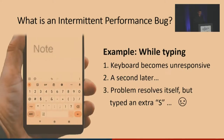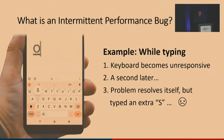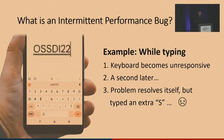So what do we mean by intermittent performance problems? These are issues that appear randomly on users' phones and often disappear after a very short period of time. For example, when a user tries to type on their keyboard and suddenly it becomes unresponsive, then a second later the performance problem disappears. This lag could result in typing an extra character, annoying the user and leading to people hating their phones and the brand associated with them.